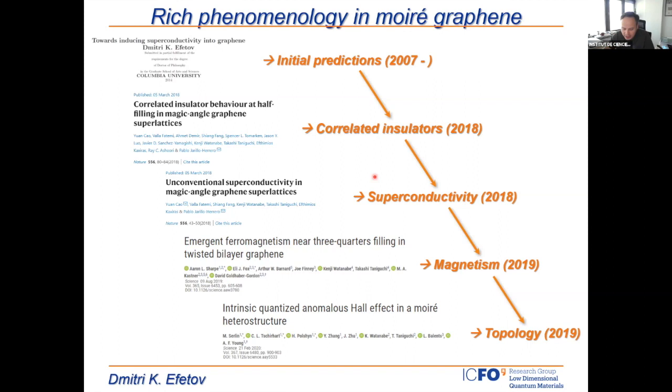A year later, the groups of Yazdani and Young also reported that the system contains magnetic phases and topological phases — they observed the anomalous quantum Hall effect. One of the really special things about this material is that all these phases live in the same device and are gate-tunable between one another, allowing an extremely high level of control.